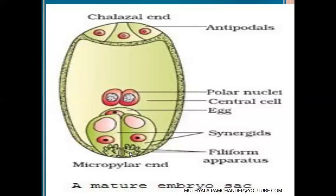When the pollen tube enters the ovule, it finally reaches the micropylar region of the ovule. The pollen tube then enters the synergids through the filiform apparatus. The main function of the filiform apparatus is attracting the pollen tube during fertilization.